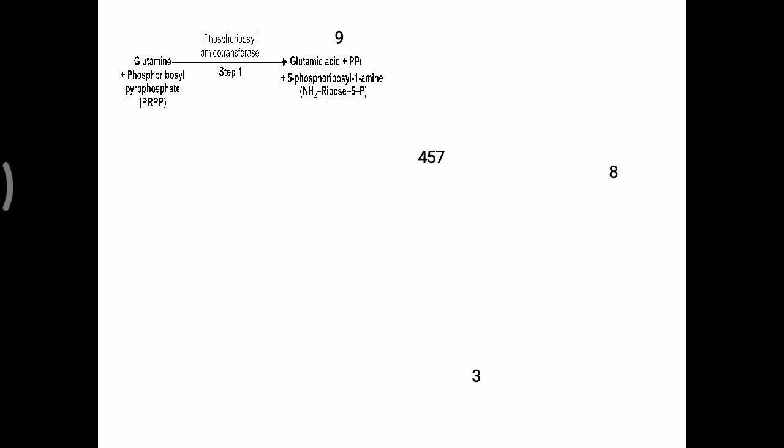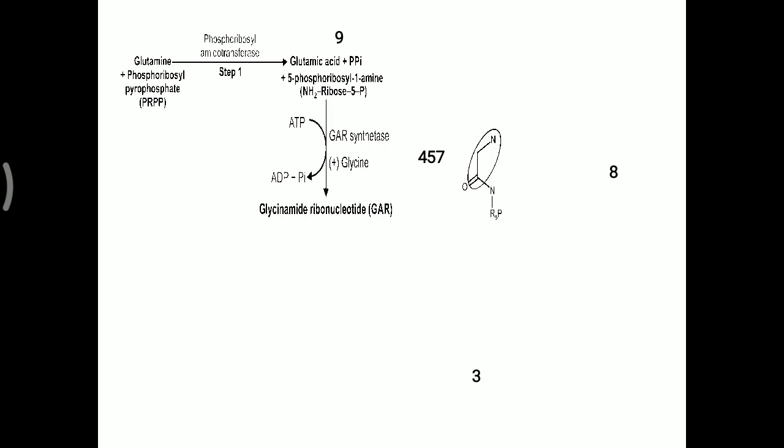In detail: first, PRPP (phosphoribosyl pyrophosphate) is added with glutamine. The phosphoribosyl amidotransferase reaction occurs — that is step 1. From glutamine, glutamic acid is separated. From PRPP, pyrophosphate is removed, making phosphoribosylamine, PRA. This adds the 9th nitrogen. In the structure, you can see the 4th, 5th carbon and 7th nitrogen are added over the purine ring via GAR synthetase with glycine. ATP is utilized, and glycinamide ribonucleotide (GAR) is synthesized.